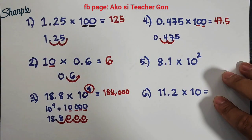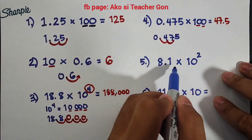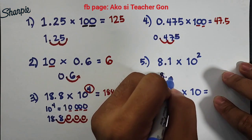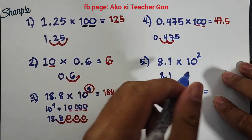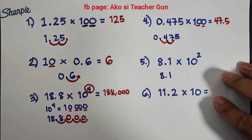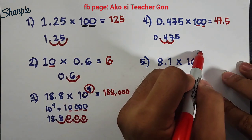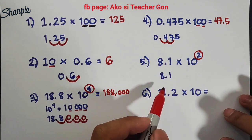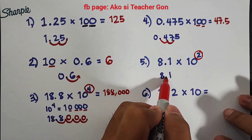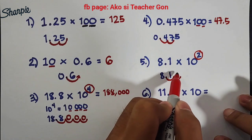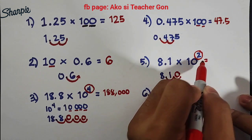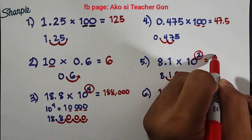And for number 5: 8.1 times 10 squared. The exponent is 2. Therefore, we will move 2 decimal places from left to right — 1 and 2 — and place a 0 there. Therefore, the correct answer is 810.